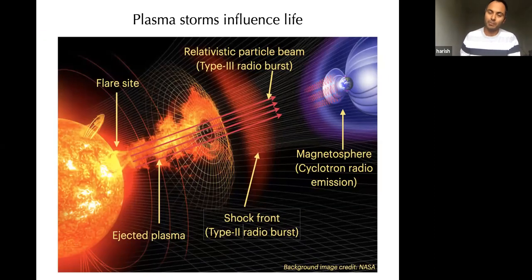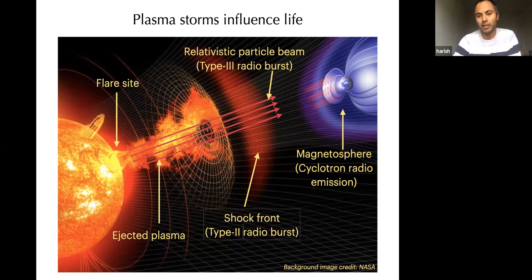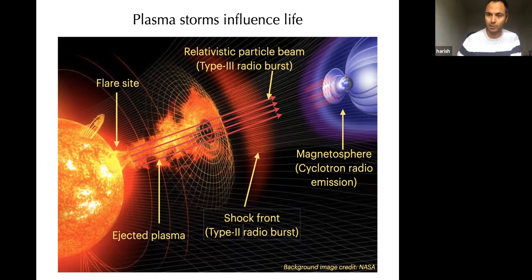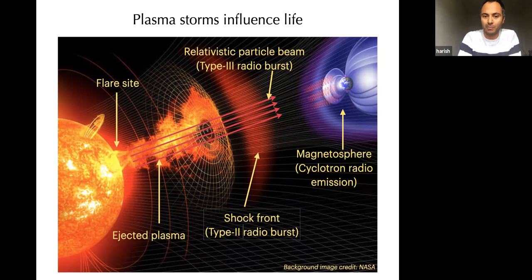Taking a step back — what do plasma and magnetic fields do in the solar system? One key thing is the solar wind: the sun continuously puts out a wind of plasma that impacts planets and can erode their atmospheres. Occasionally there's a big flare — essentially an explosion on the sun's surface — ejecting enormous amounts of plasma into the interplanetary medium, sometimes accompanied by a beam of relativistic particles. When these impact Earth, they can change atmospheric chemistry, influencing ozone and nitrous oxide.